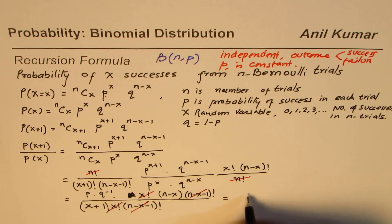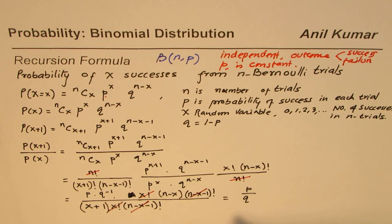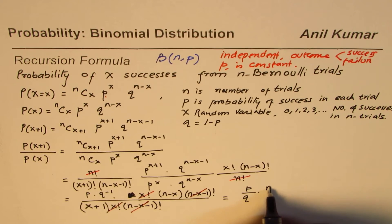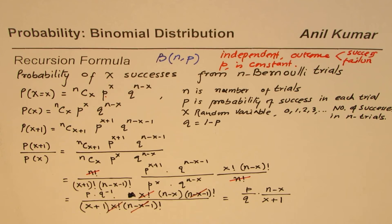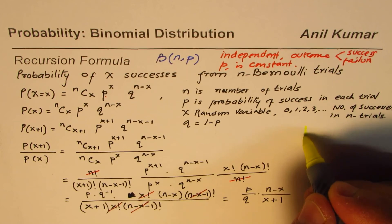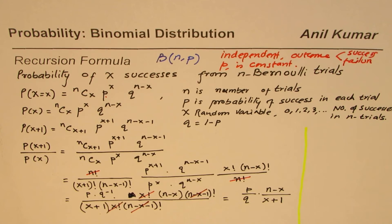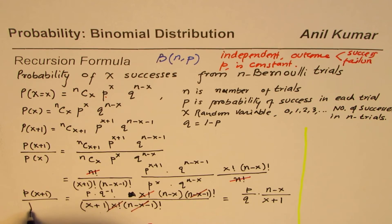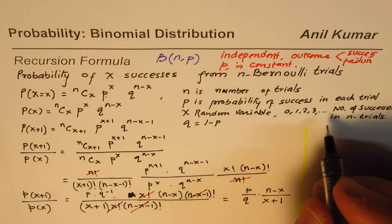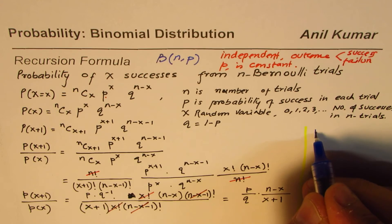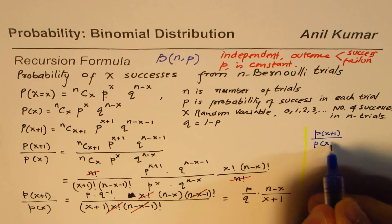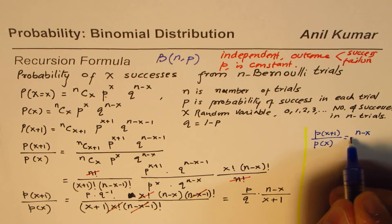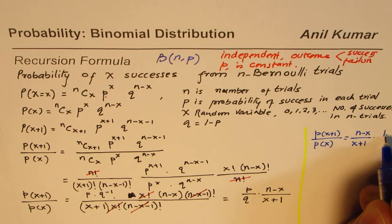After all cancellations, we are left with p divided by q, where q equals 1 minus p, with (n−x) in the numerator and (x+1) in the denominator. So we can now summarize the recursion formula: P(x+1) divided by P(x) equals (n−x) divided by (x+1) times p over q. That is the recursion formula.